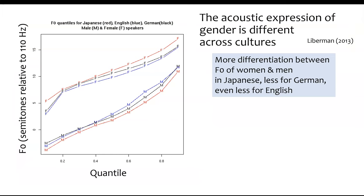The differentiation of gender turns out to be different in different cultures. On this graph, three colors represent the quantiles of pitch range — the lowest pitches among men on the lower left, the highest pitches among men above, and lines for women above that. The blue lines are closer together, the black lines farther apart, and the red lines even farther. The red lines are F0 measurements from Japanese talkers, black from German talkers, and blue from English speakers — showing a language-specific pattern that determines how much F0 differentiation there is between women and men.